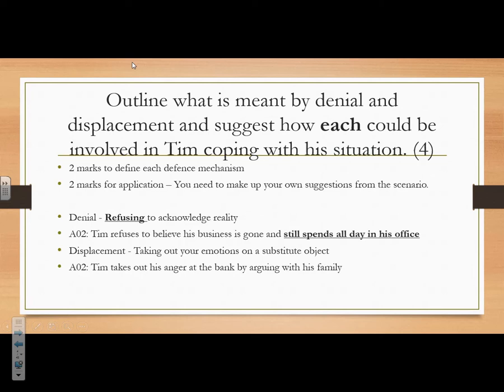Denial is refusing to acknowledge reality — the two key words are 'refusing' and 'reality'. So refusing to accept or acknowledge reality. The example here is that he refused to believe his business is gone. Most of you missed the application mark: you need to say what he would do, such as he still goes to the office every day, gets up at 7 o'clock, still checks his emails — something showing he's refusing to accept reality has happened. Displacement is taking out your emotions on a substitute object or helpless victim. The example would be Tim takes his anger out at the bank by arguing with his family — he's crossed with the bank but can't do anything about it, so he argues with his family instead, or kicks a bin over.